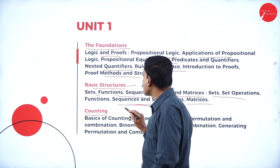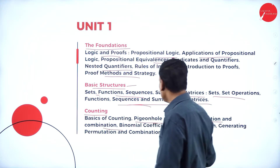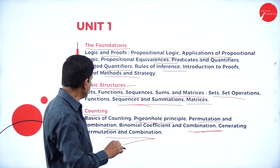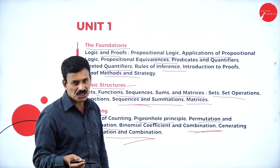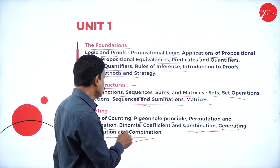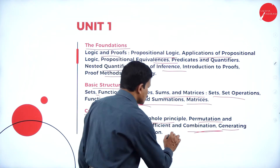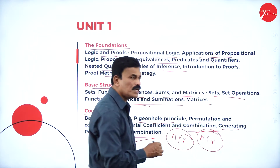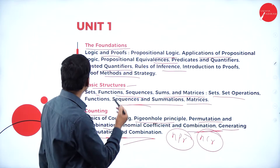The third part of the first unit is counting — that is the counting principles, including the pigeonhole principle, permutations and combinations, binomial coefficients, and generating permutations and combinations. You might have studied permutations like NPR in previous classes. This is the formula we will use for permutations, NPR, and for combinations we will use NCR. Based on this, we will form permutations and combinations. These are the key things in the first unit — the foundations.